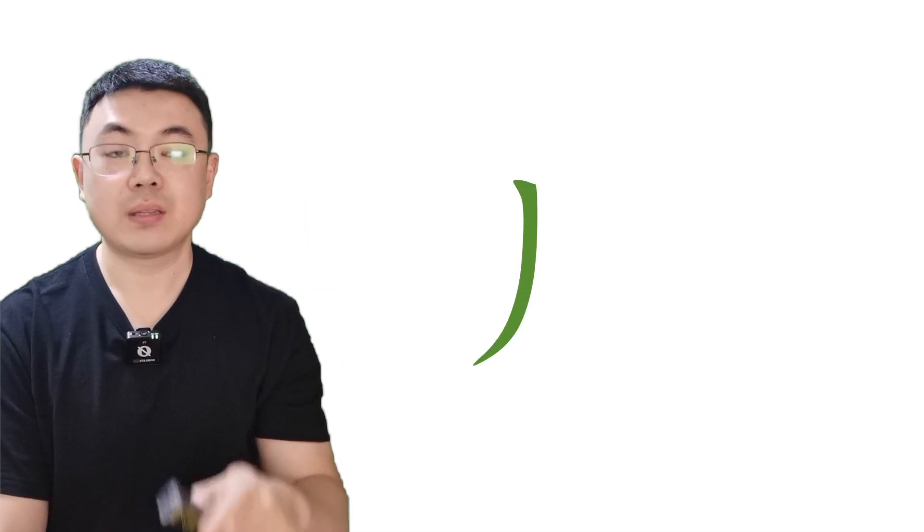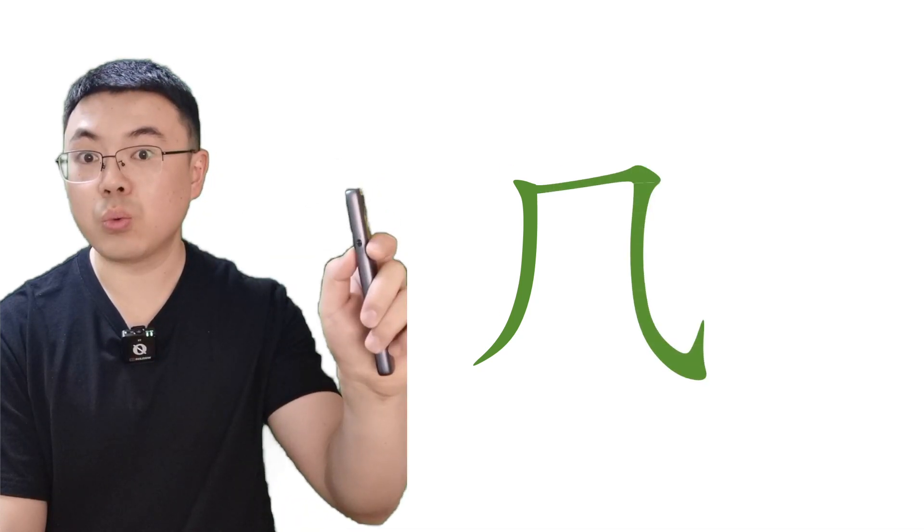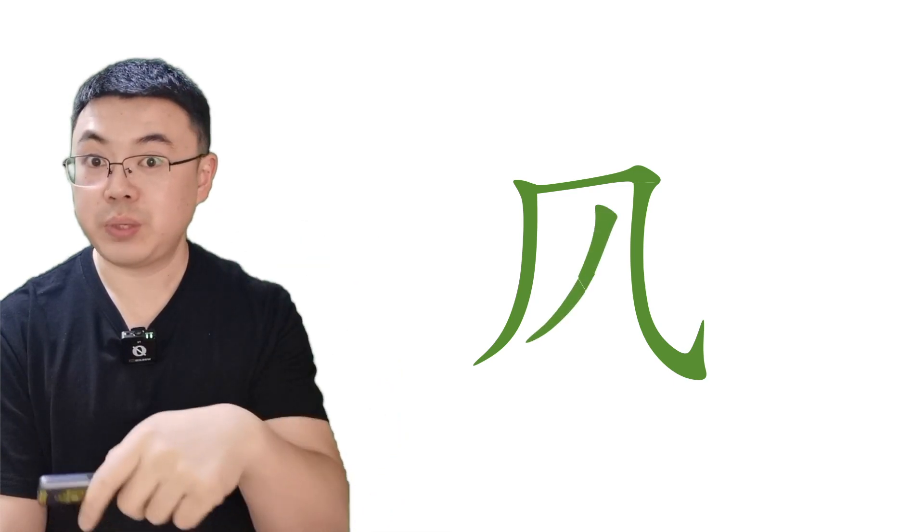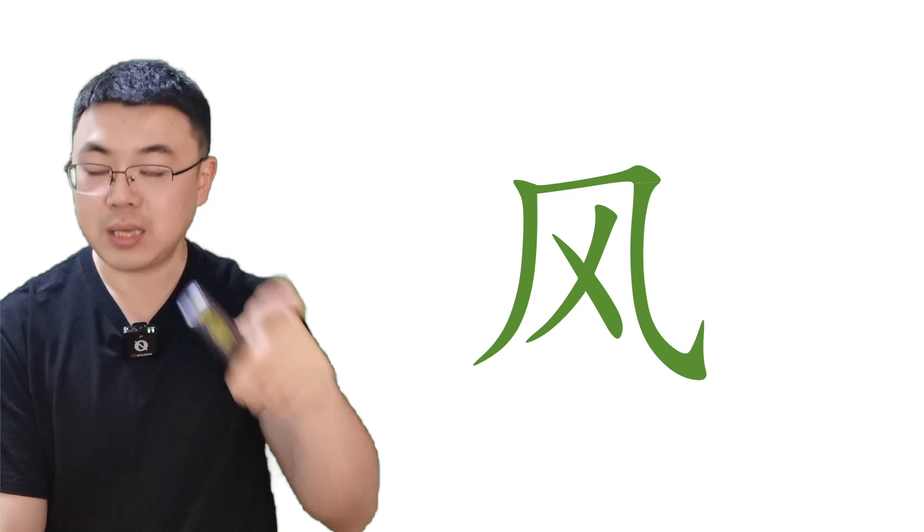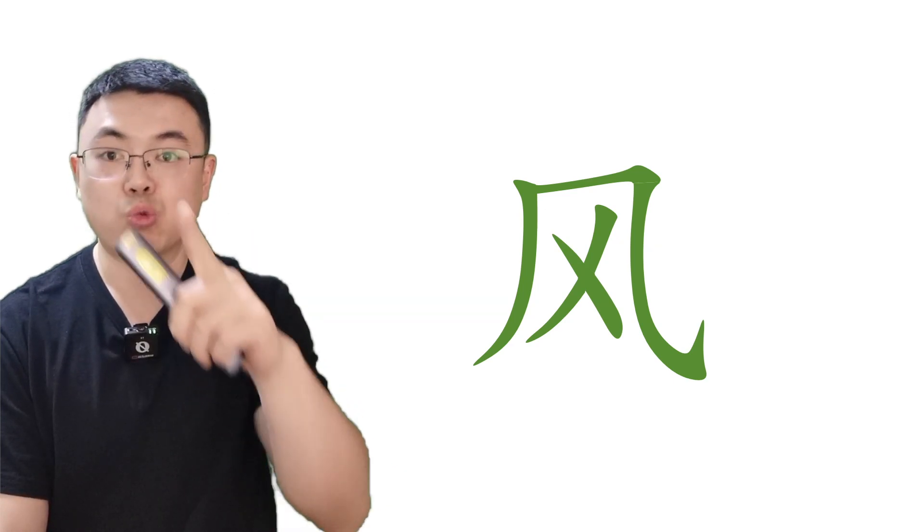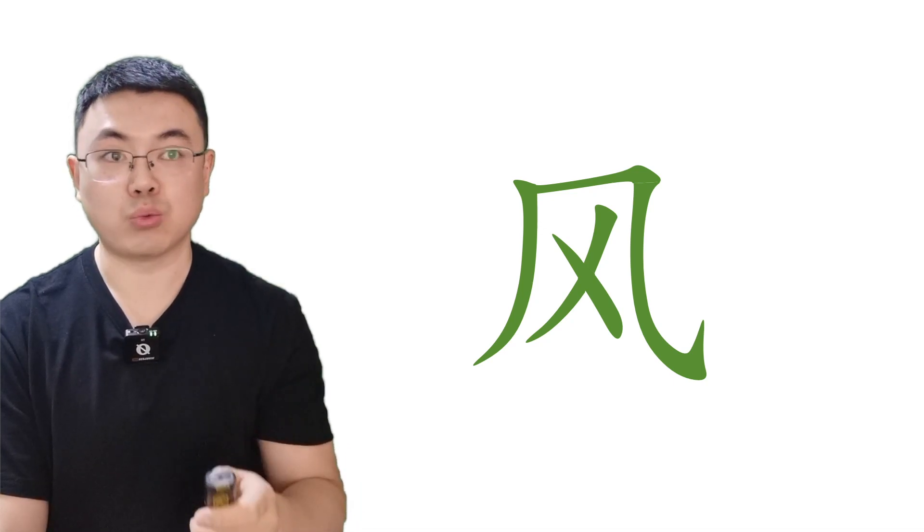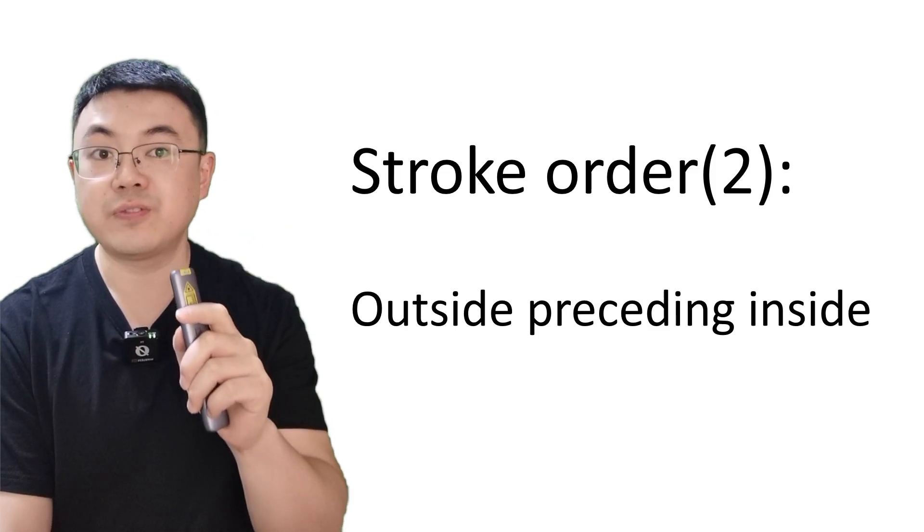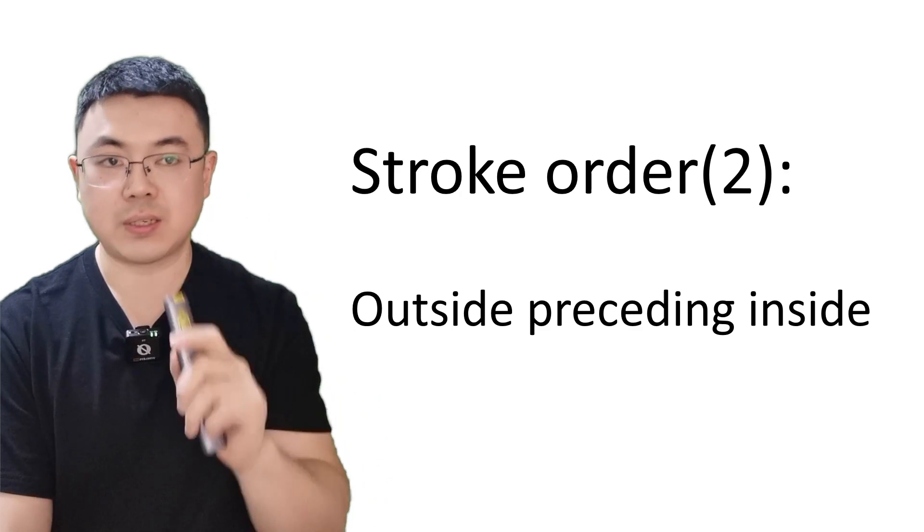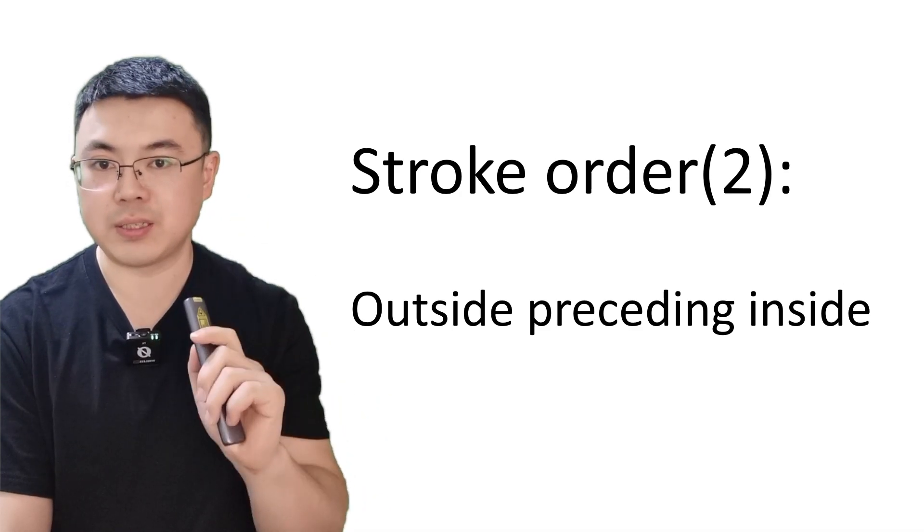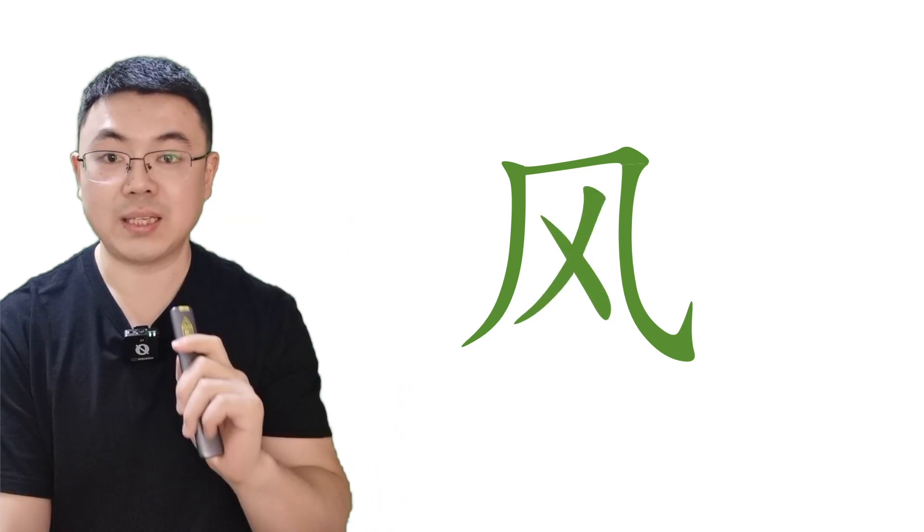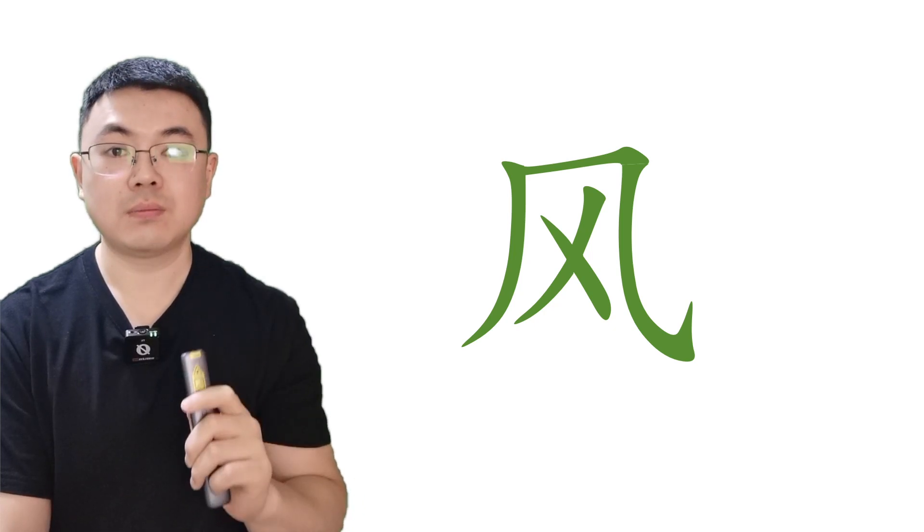First stroke, pie. Heng xie gou. Pie. Dian. Here is the rule. Outside preceding inside. You have to finish the outside structure first, and then finish the inside part. Let's do it again. Pie, heng xie gou, pie, dian. Wind. Feng. Understood?